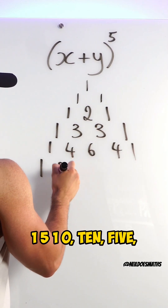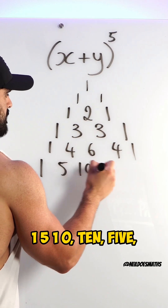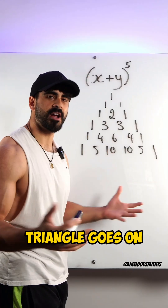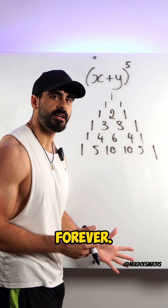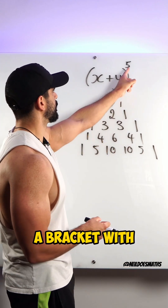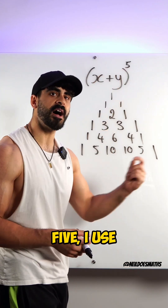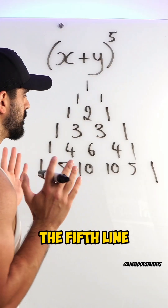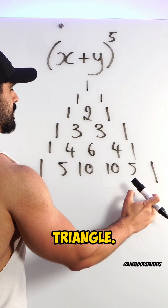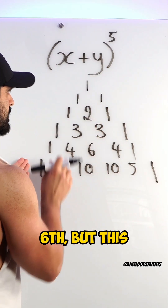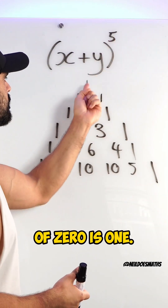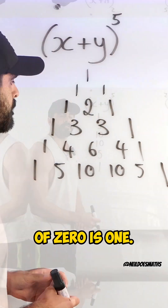Then we'll have one, five, ten, ten, five, and one. Now Pascal's Triangle goes on forever, but if I want to expand a bracket with a power of five, I use the fifth line of Pascal's Triangle. I know this looks like the sixth, but this is the zeroth line, because anything to the power of zero is one.